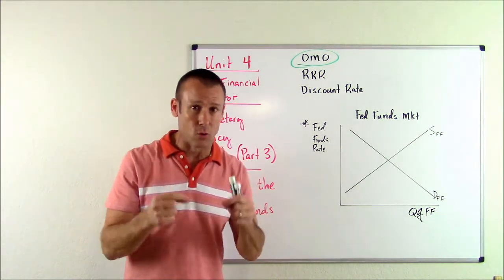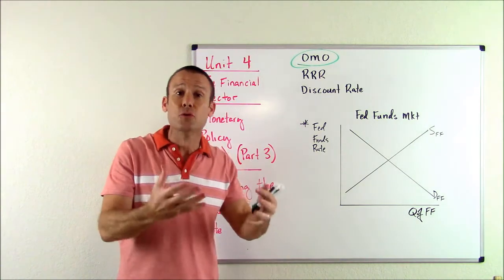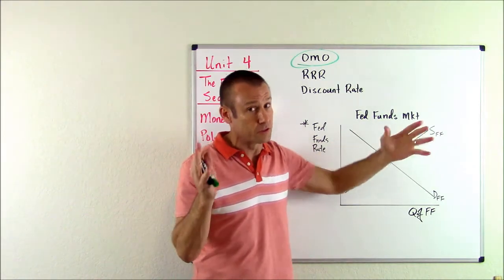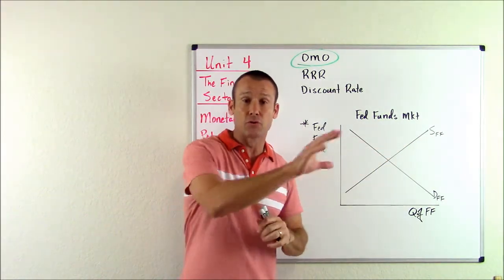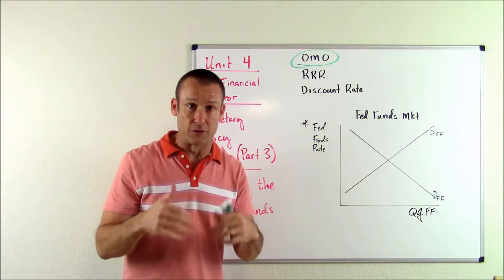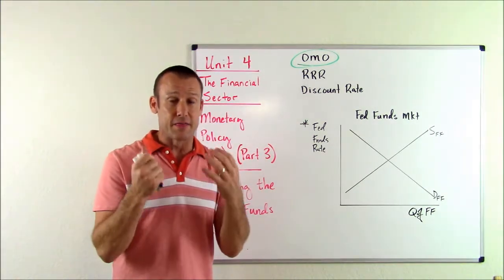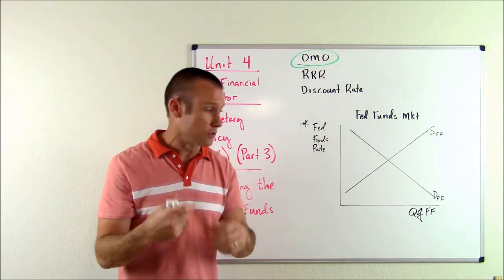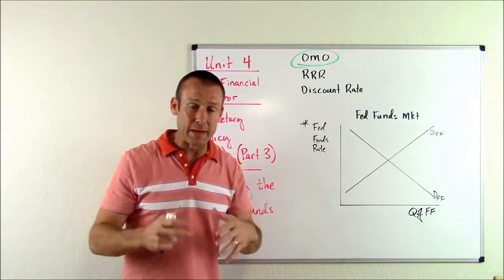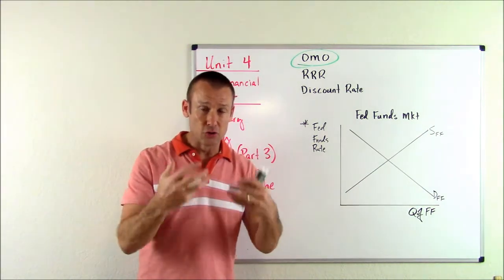Banks lend and borrow reserves on an overnight, very short-term basis. Why? Because banks at the end of the day sometimes have excess reserves and want to do something with them even for a night. Banks with excess reserves supply federal funds — that is, bank reserves — to other banks. Other banks find themselves deficient in reserves; they need to go get federal funds. Those are the demanders. The Fed sets the required reserve ratio, and if a bank's reserves are less than required, they must borrow. This is interbank lending, from one bank to another, on an overnight basis.